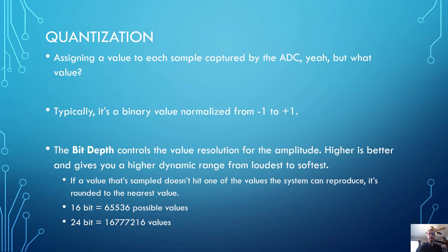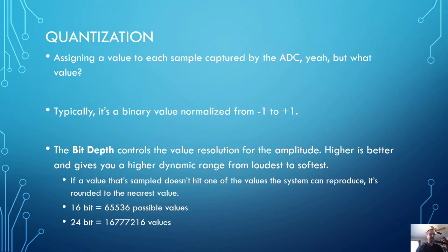We're sampling x number of times per second, but what are the values of each sample? This is where quantization comes in. Typically, this is a binary value normalized from negative one to positive one. This makes everything very easy to deal with in terms of math, because you're dealing with zero to 100% of the signal and zero to negative 100% of the signal — because waveforms go both up and down below the center zero line.